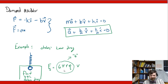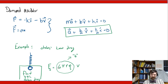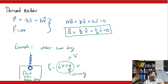Stokes law drag has the form F_Stokes equal to 6 pi r eta v, where the 6 pi r eta term is basically your b in the damped oscillator equation — your drag coefficient. Here r is the radius of the sphere (since Stokes law assumes a spherical object) and eta is the viscosity of the fluid. So as long as you are in the Stokes law regime, this term plays the role of the damping constant.